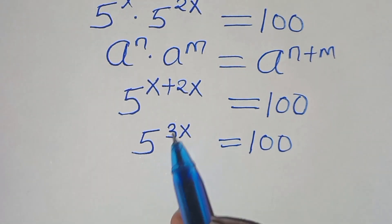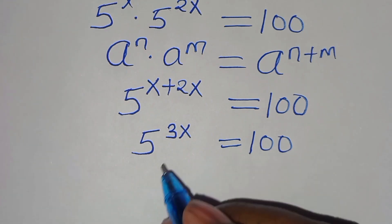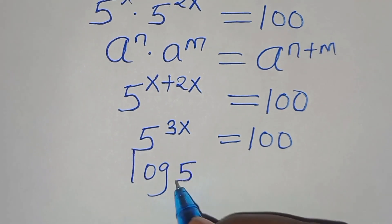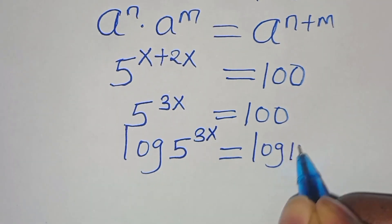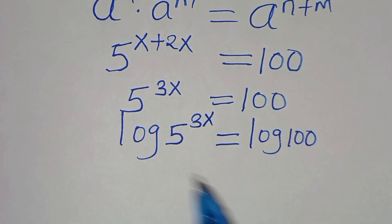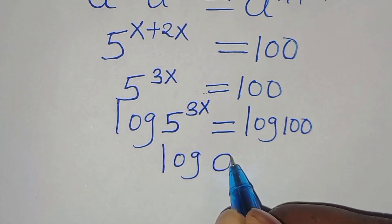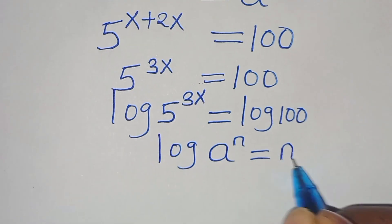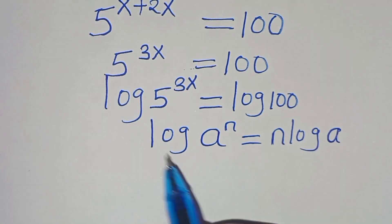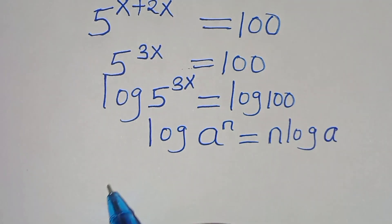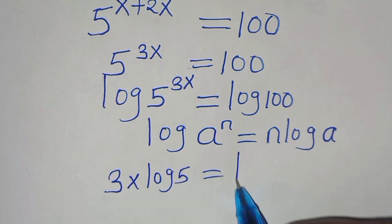The next step to solve for x: we introduce logarithm on both sides, so that we have log of 5 to the power of 3x, this is equal to log 100. Now log of 5 to the power of 3x is in the form of log(a^n), which can be expressed as n·log(a). Applying this power property, log 5 to the power of 3x becomes 3x·log 5, this is equal to log 100.